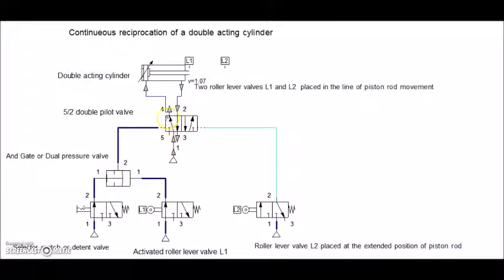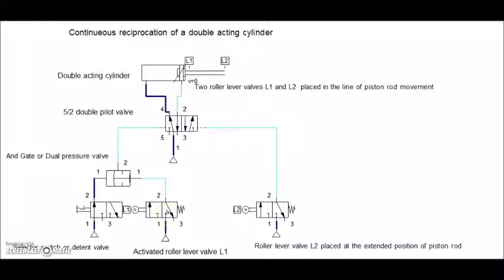The double pilot valve actuating position changes and the compressed air through this passage reaches the cylinder on the other side of the piston. The piston rod extends leaving L1. That means L1 is now free but the compressed air is blocked in its original position. L2 will be pressed now as the piston rod reaches L2.